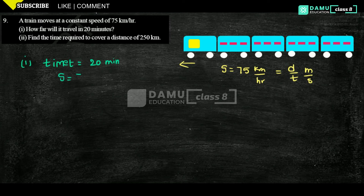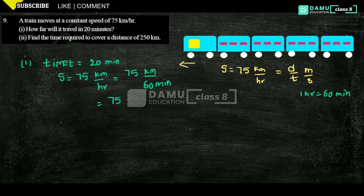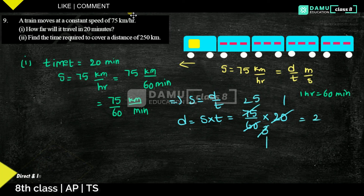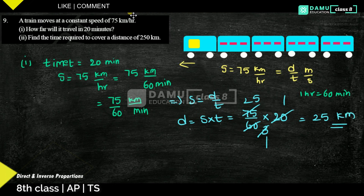Since speed is 75 km per hour, that means 75 km per 60 minutes, which equals 75 by 60 km per minute. Using distance equals speed times time: distance equals 75 by 60 times 20 minutes. After cancellation, the train will travel 25 km in 20 minutes.